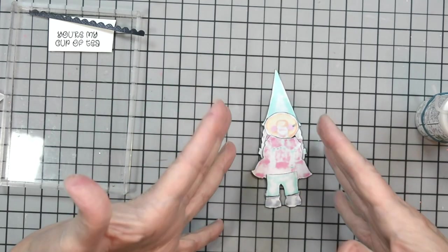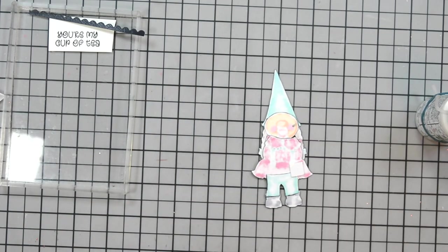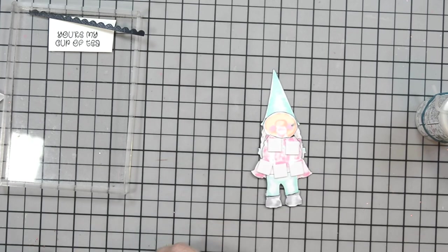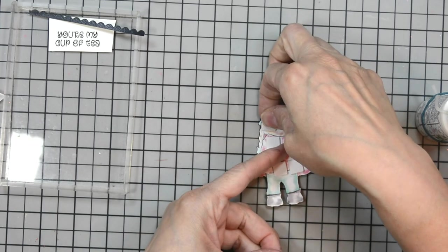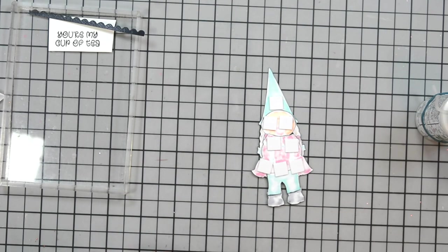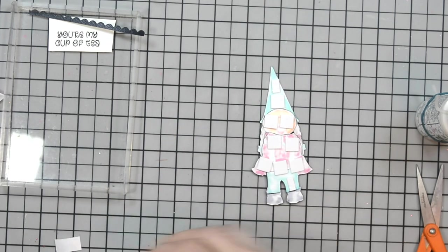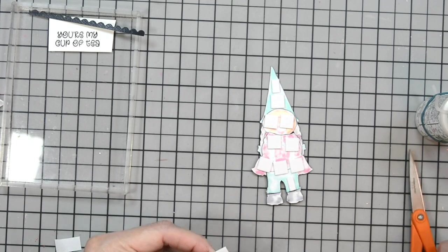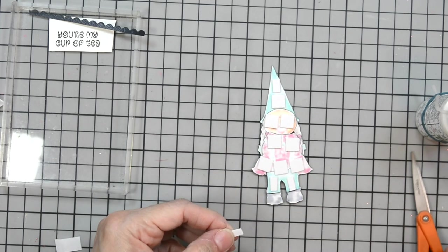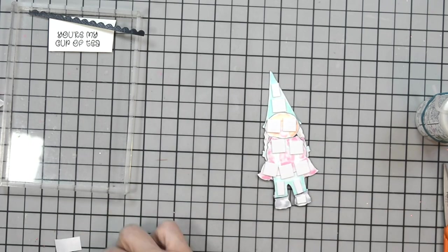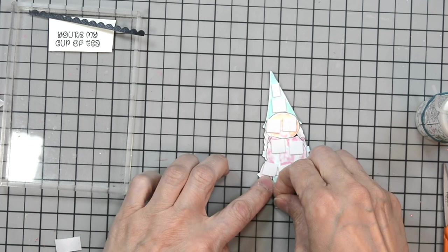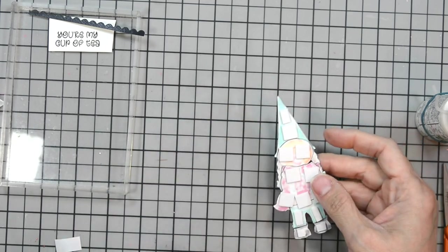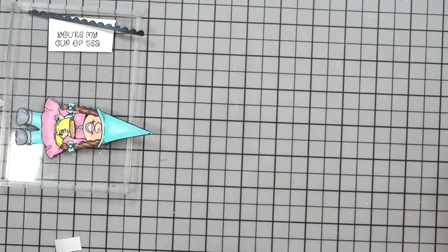Now our gnome is complete. I'm going to adhere some foam dots to the back because I want her to be raised off our card. I'm using low-profile foam tabs—not the real thick ones—so you have some height but not a lot, making it easy to mail. I'm placing foam adhesive all over the back, even her little feet, so they don't buckle.